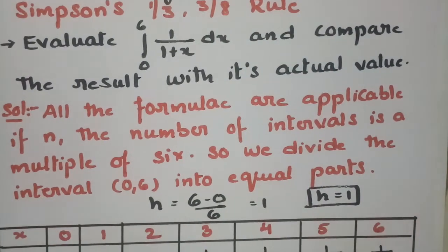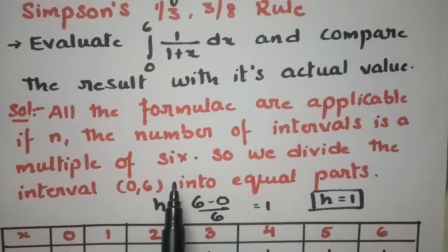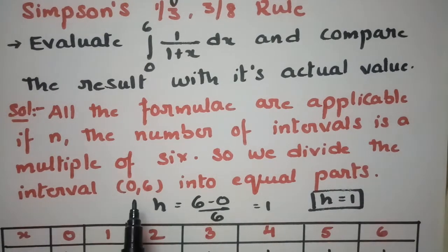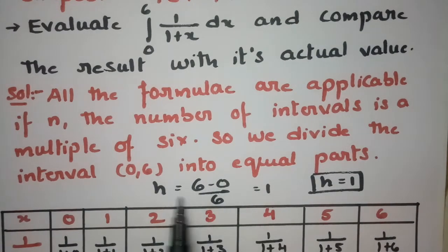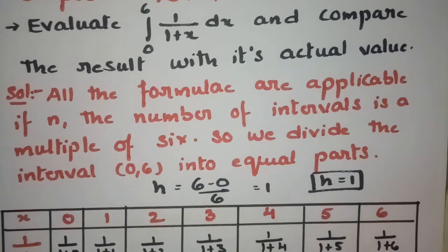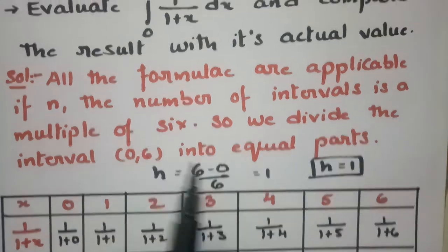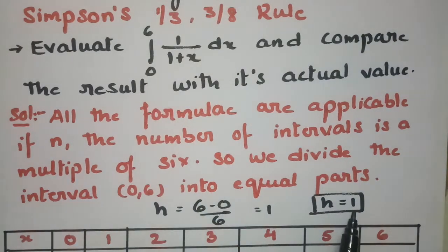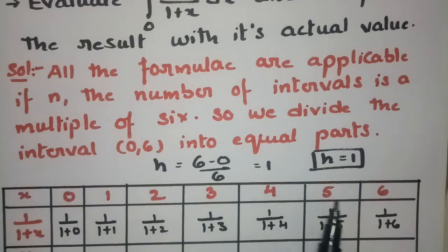Coming to the solution, all the formulae are applicable if n, the number of intervals, is a multiple of 6. So we divide the interval [0, 6] into equal parts: h = (b - a)/n = (6 - 0)/6 = 1. So h is equal to 1. The x values start at 0 and increment by 1: 0, 1, 2, 3, 4, 5, and 6.